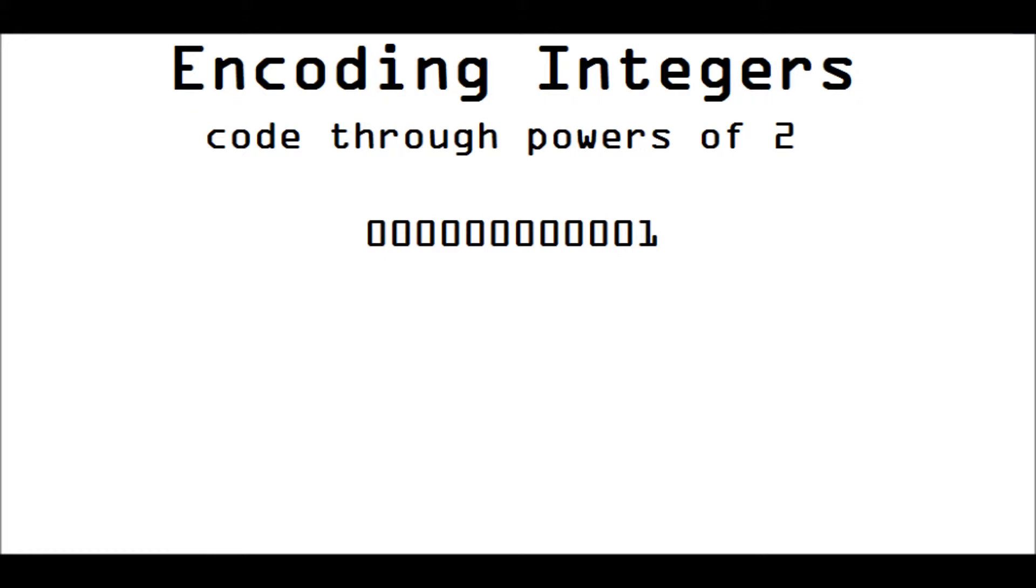It's just one. And what that one there represents, the one represents one times two to the power of zero, which equals one. And that's the answer. It's one.